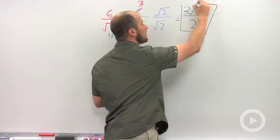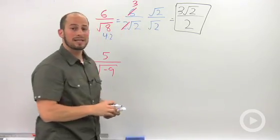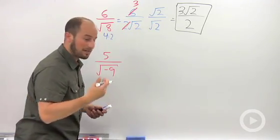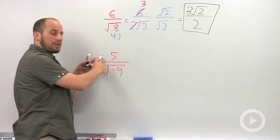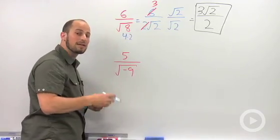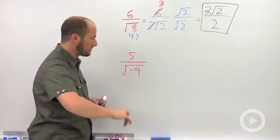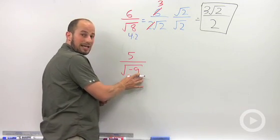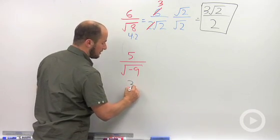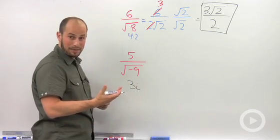Same exact idea when we are dealing with imaginary numbers, numbers involving i. Right here we have 5 over square root of negative 9. The first thing I want to do is simplify that denominator radical. The square root of 9 is 3, so this is going to be 3i in the denominator.